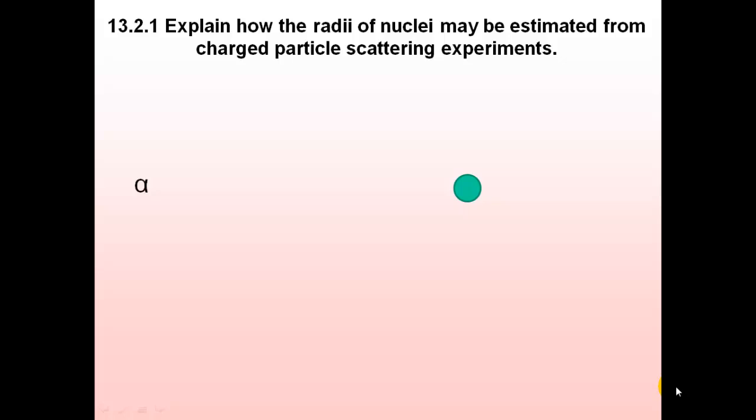So we basically calculate the distance of closest approach. So this is the atom here, with the nucleus in the middle, and we basically fire this alpha particle at the nucleus, and it's moving towards it, but then it will be rapidly accelerated away as it approaches the nucleus due to the Coulomb force, or the electrostatic repulsion.